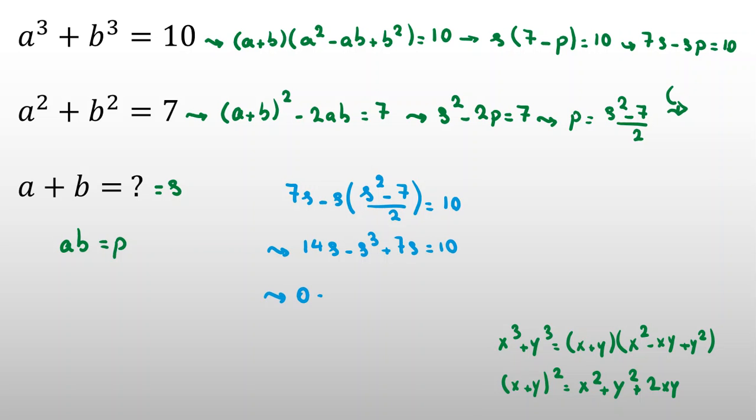Now let's rearrange everything. We multiplied by 2, so 10 becomes 20. Taking everything to one side: s³ - 14s - 7s + 20 = 0, which simplifies to s³ - 21s + 20 = 0.